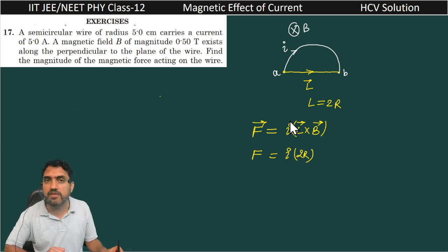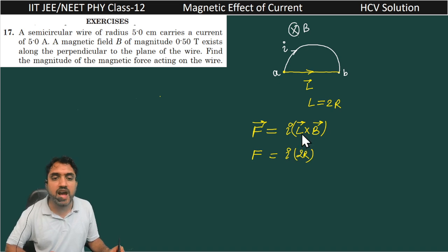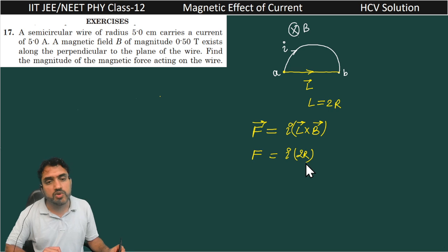That is the concept that we have already covered in the last question. So if you are not able to understand how we are taking this L vector equal to 2R, you just go through the last question, that is question number 16.